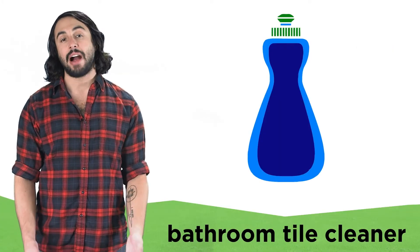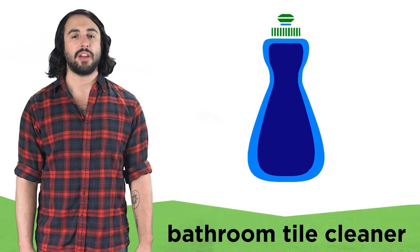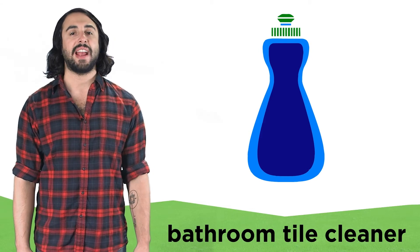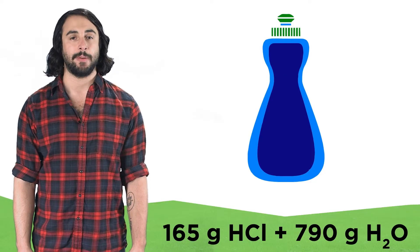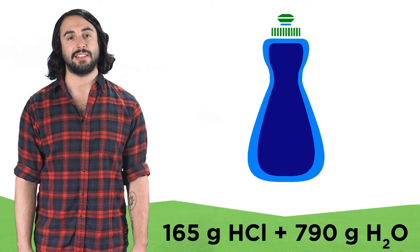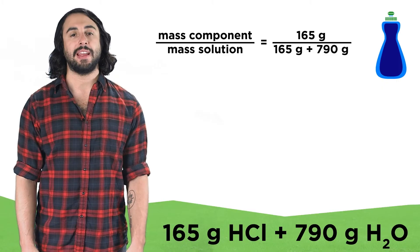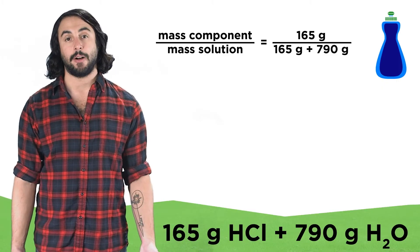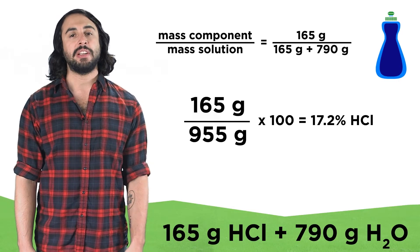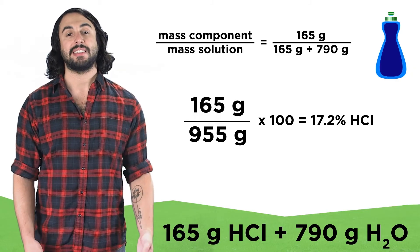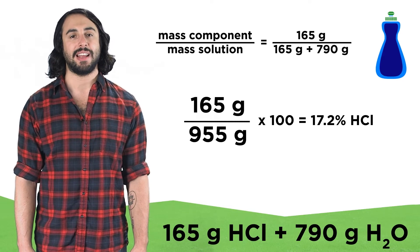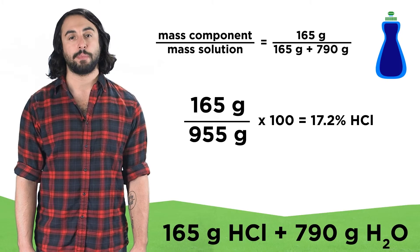In order to make sure we can calculate mass percentage, let's look at another household cleaning product. Let's say a bottle of bathroom tile cleaner contains 165 grams of hydrochloric acid and 790 grams of water. What would be the percent mass of hydrochloric acid in this cleaner? Using our equation, we can plug in the mass of the component — in this case HCl — and the mass of the solution, which would be the sum of these masses. Then we divide and multiply the result by 100. We should get 17.2% as our answer, which we can then compare to other products if necessary.